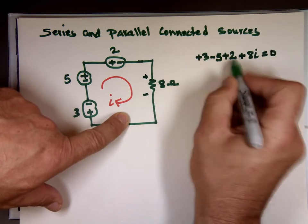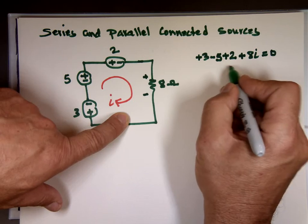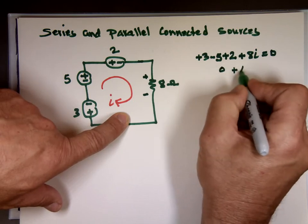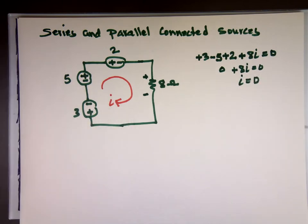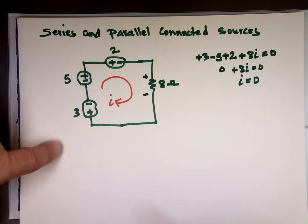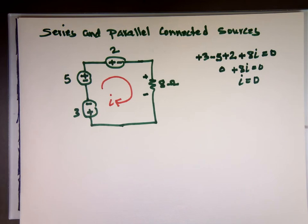And what happened to these sources? Mathematically, this number is zero. The current is zero. So it looks like I took these three sources and replaced them with one source of value of zero.